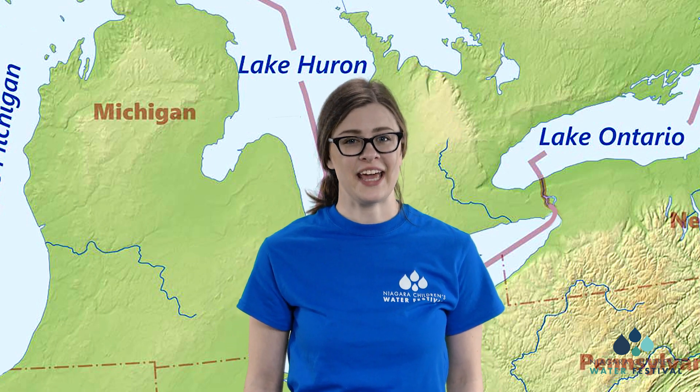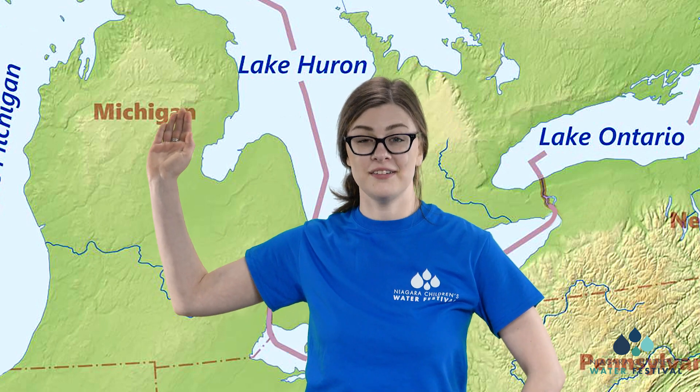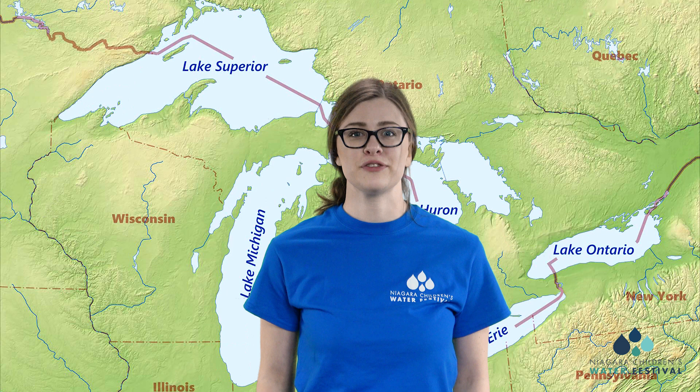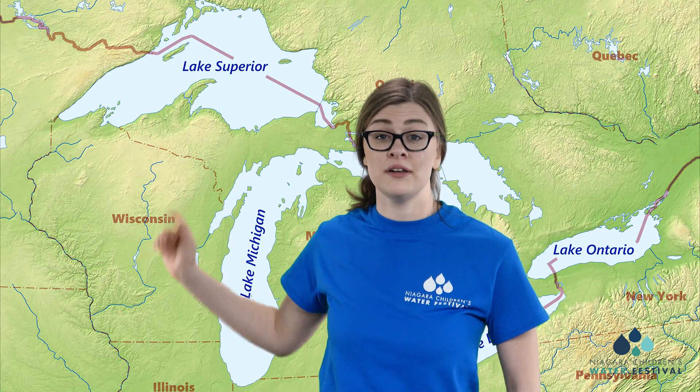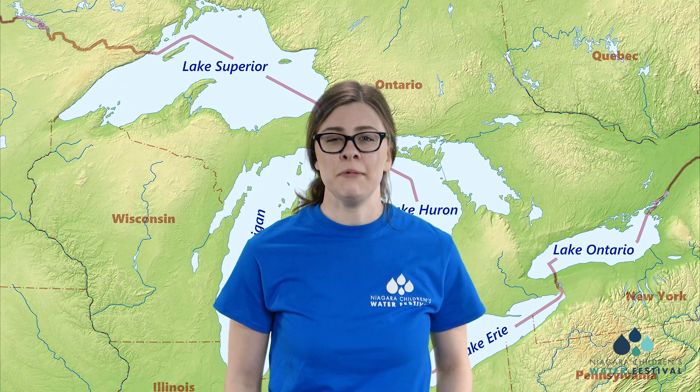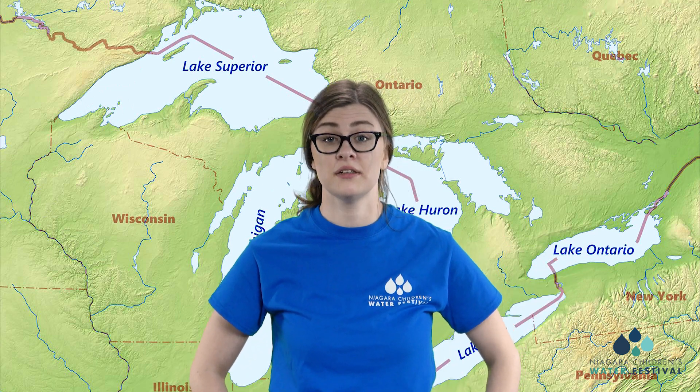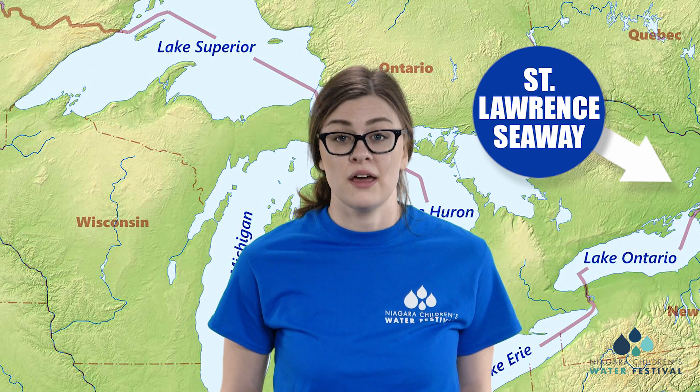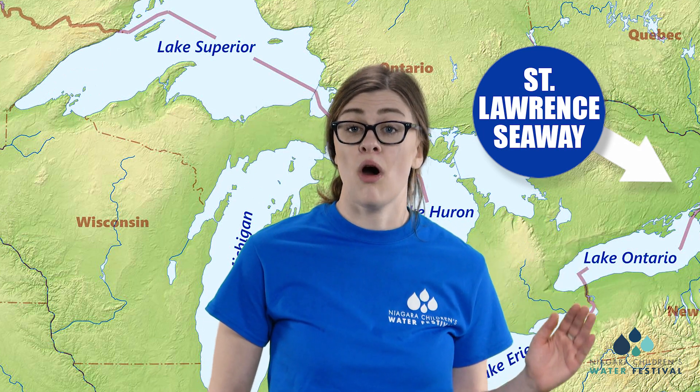Now, what direction do the Great Lakes flow? As a hint, we start with the most northern Great Lake — that's Lake Superior. From Lake Superior, the Great Lakes flow down to Lake Michigan, back up to Lake Huron, over to Lake Erie, and then to Lake Ontario. From Lake Ontario, do you know the name of the passage that goes through Quebec out to the ocean? The name of that passageway is the Saint Lawrence Seaway, going from Lake Ontario all the way out to the ocean.